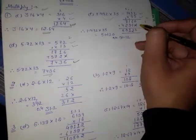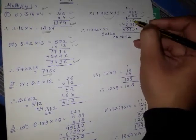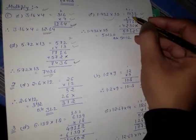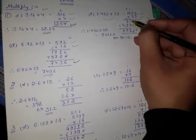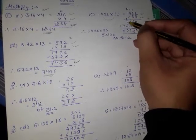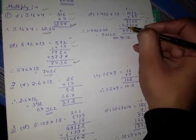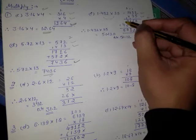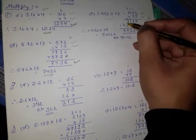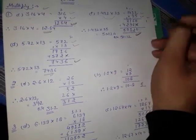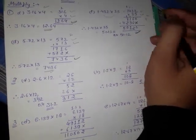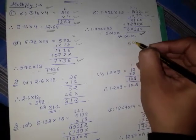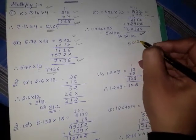अब इनको add कर दीजिए। 0, 6 plus 6 is 12 — write 2, carry 1. 9 plus 1 is 10, plus 1 is 11 — write 1, carry 1. 7 plus 1 is 8, 8 plus 2 is 10 — write 0, carry 1. 4 plus 1 is 5. तो multiply करने के बाद आएगा 50120।